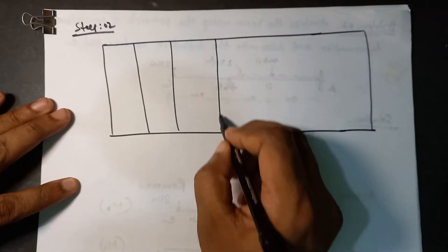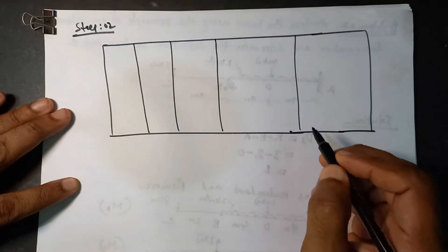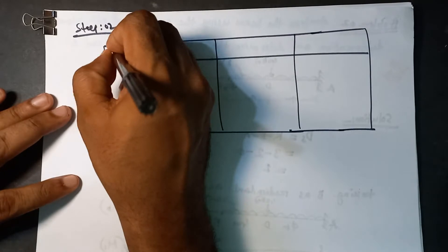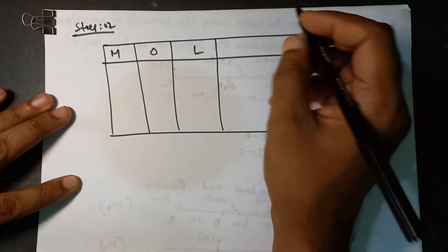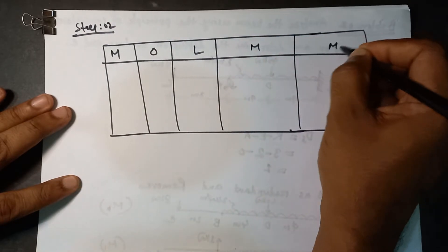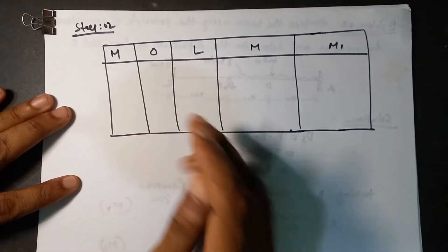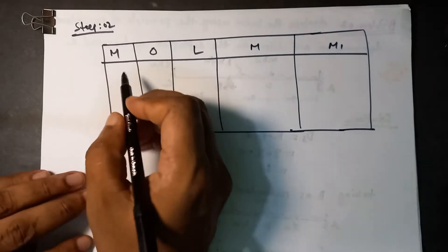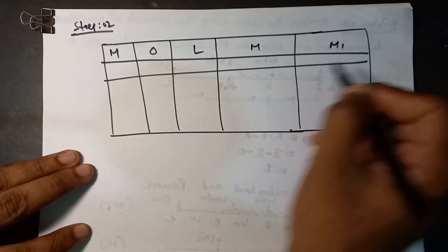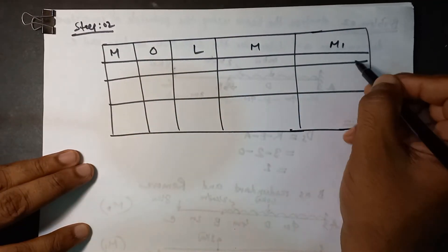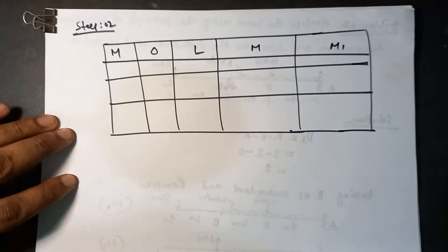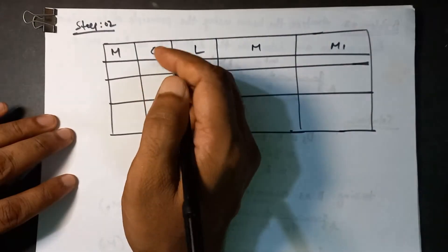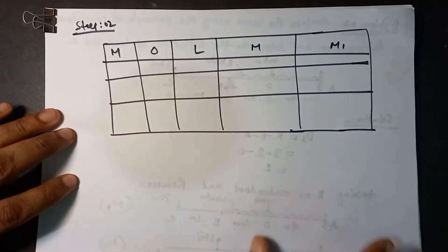Okay, touching a member — I am at a particular origin now. So remember: on the member, we go from right to left — right to left for both members.